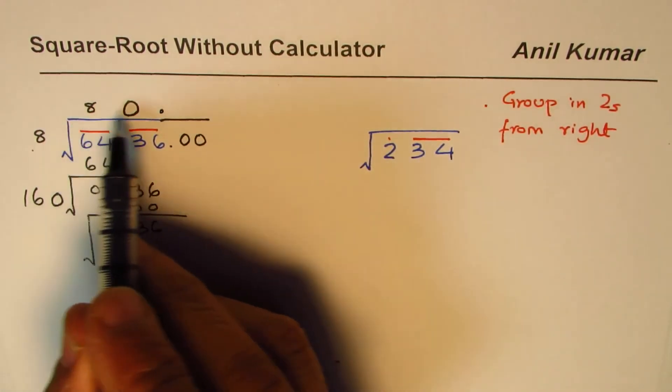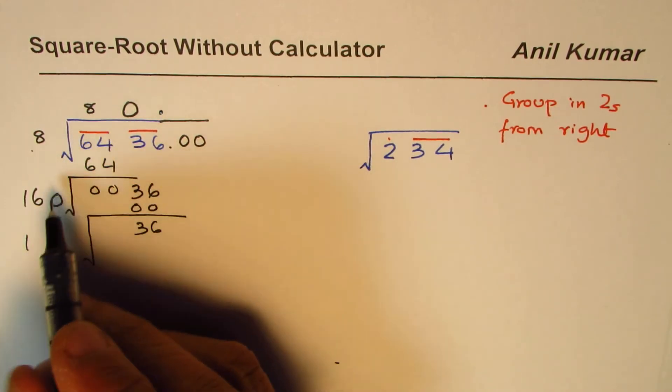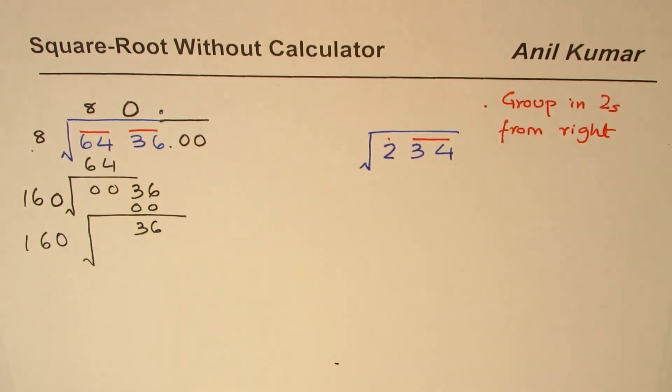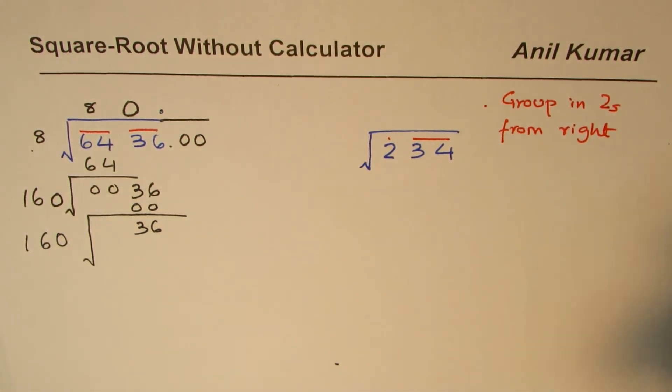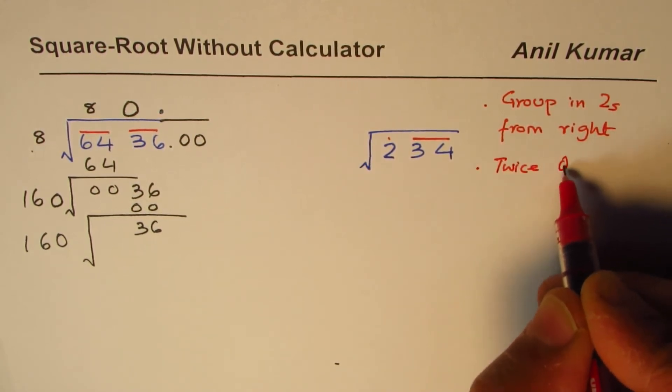Whenever you put decimal, in the quotient also you'll place a 0. Now let's continue with our step - that is twice the quotient which is 160 in this case. So the second step is you have to do twice quotient.